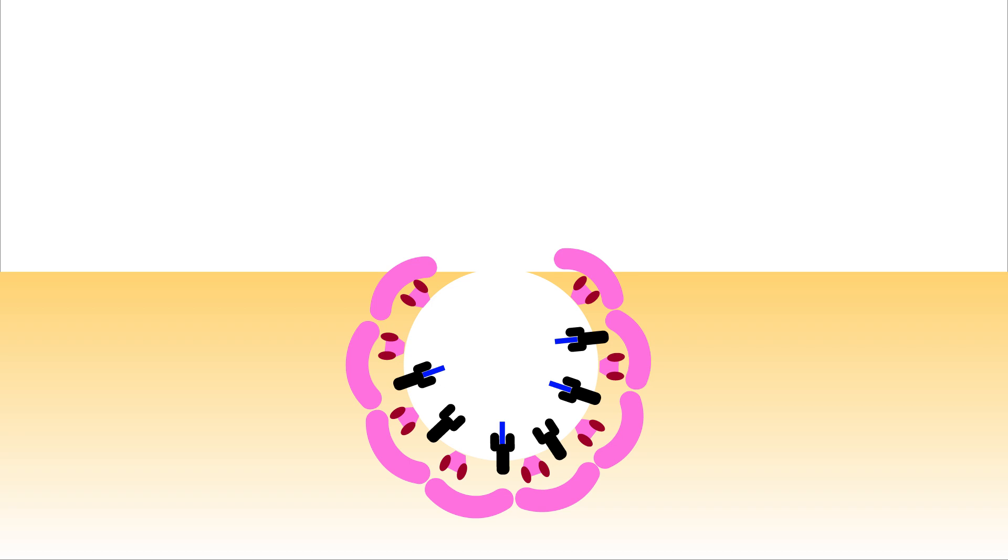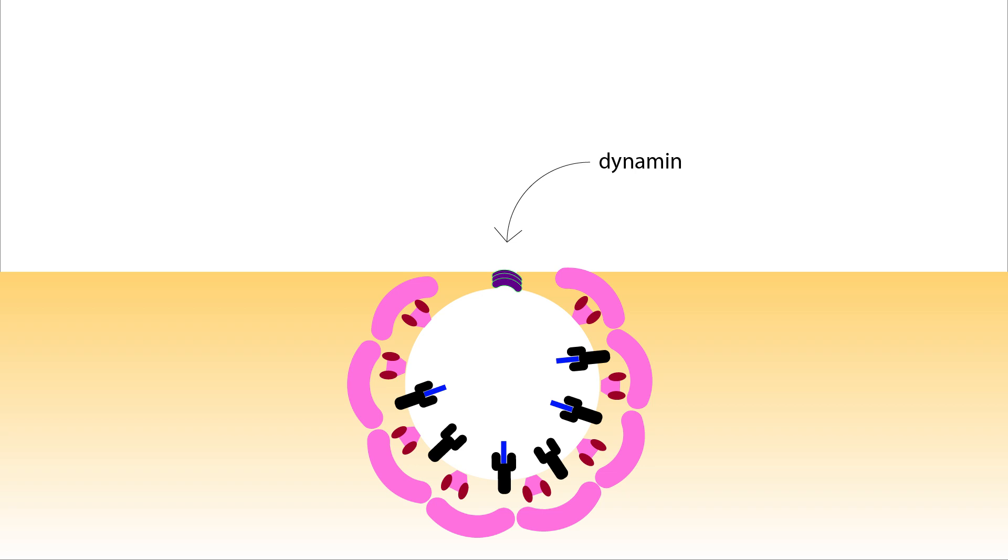Complete vesicle fusion requires a large GTPase called dynamin. Dynamin forms helical strands that wrap around the thin neck of the budding vesicle. As it hydrolyzes GTP, the spiral constricts, causing the vesicle to pinch off from the membrane.